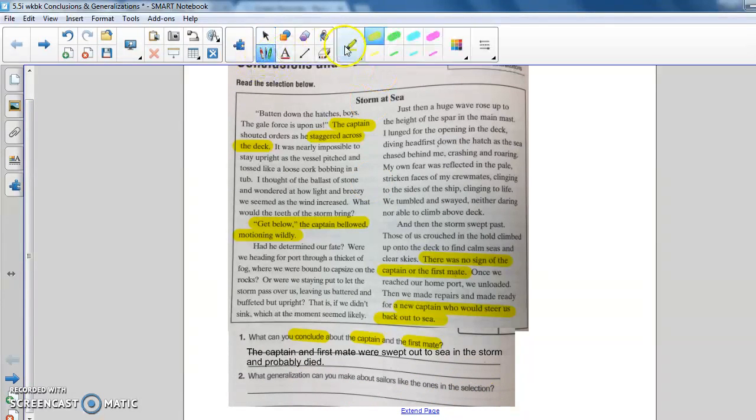So making a generalization is just basically making an inference using just a little bit of information. And you can say, in general, I think sailors like the ones in the selection could be described as blah, blah, blah. So looking back in the selection, what do we know about the sailors?